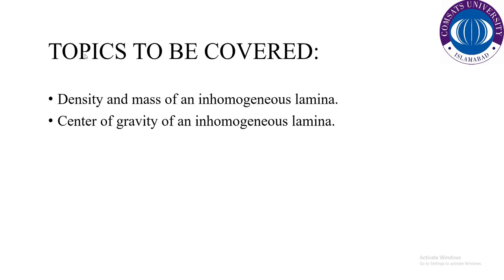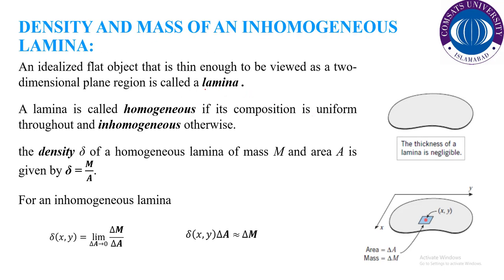In today's lecture we will study the density and mass of an inhomogeneous lamina. Initially I will explain what this lamina is, what this inhomogeneity is, and the center of gravity of an inhomogeneous lamina. Starting with the definition: a lamina is basically a two-dimensional object. The proper definition is an idealized flat object that is thin enough to be viewed as a two-dimensional plane region. In simple words, a two-dimensional object with an x-axis and y-axis is called a lamina.